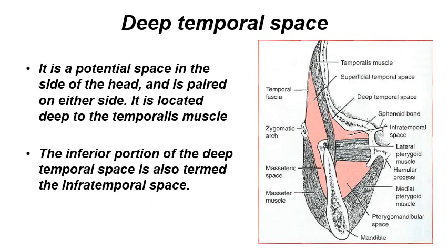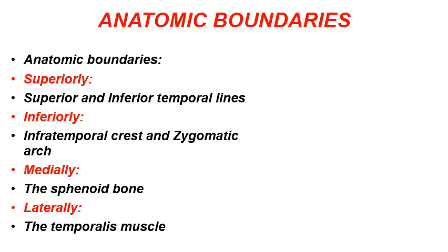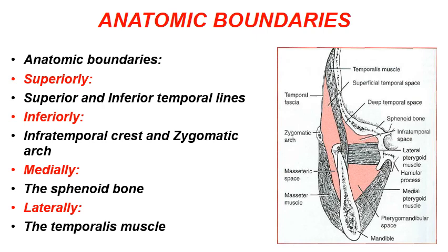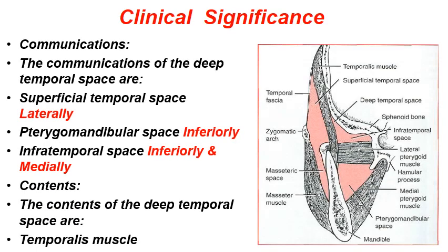Now we come to the deep temporal space — a potential, paired space on the side of the head, located deep to the temporalis muscle. The inferior portion of the deep temporal space is also termed the infratemporal space. Its anatomical boundaries: superiorly the superior temporal lines, inferiorly the infratemporal crest and zygomatic arch, medially the sphenoid bone, and laterally the temporalis muscle. The deep temporal space communicates laterally with the superficial temporal space, inferiorly with the pterygomandibular space, and directly with the infratemporal space inferiorly and medially. It contains temporalis muscle fibers.